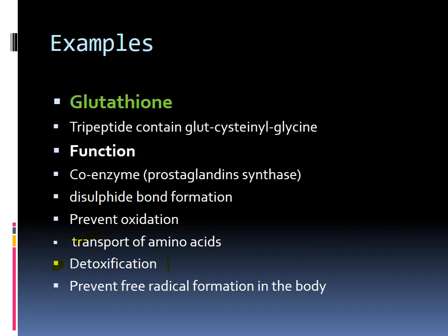Now I will tell you some examples of biologically active peptides. Number one is glutathione, which is a tripeptide — it contains three amino acids in its structure. It is basically a coenzyme and its function is that it prevents oxidation in the body.